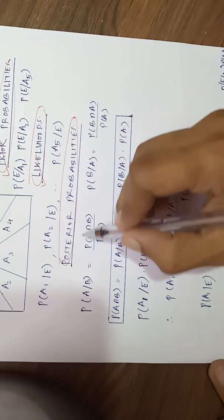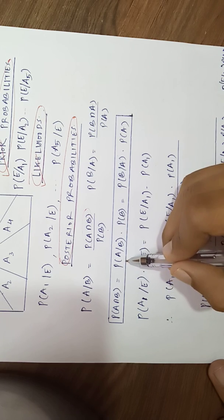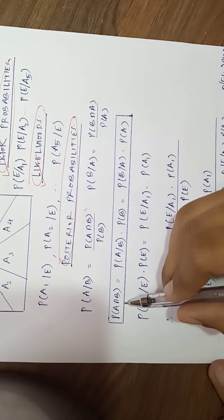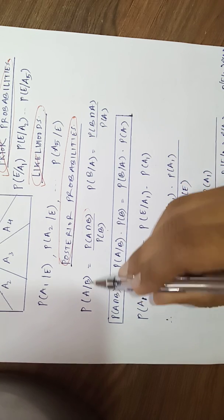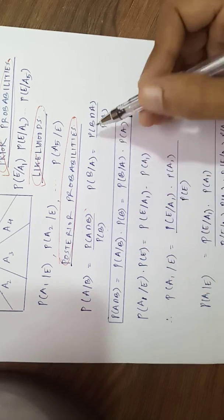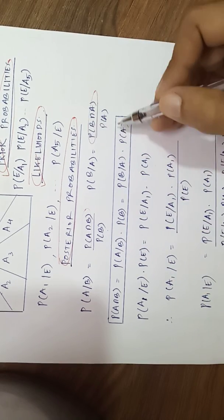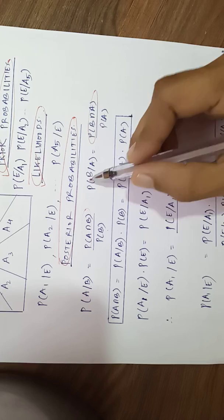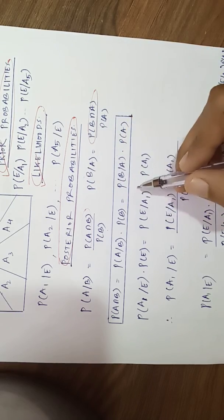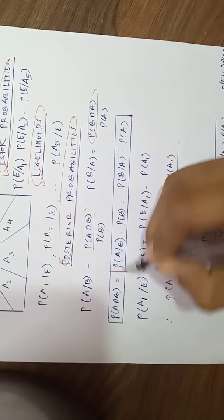Here we have the term, so this term should need too. Probability of a intersection b is probability of a given b multiplied by probability of b. Similarly we have the second term, a intersection b is same as probability of b given a into probability of a.